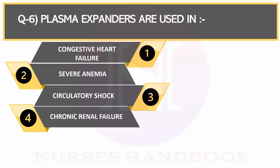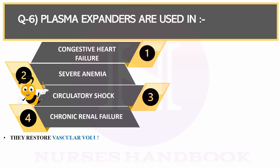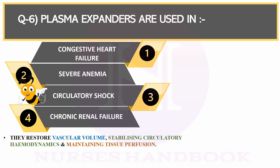The correct answer is circulatory shock. Plasma expanders are agents which have a relatively higher molecular weight. They increase plasma volume, stabilize circulatory hemodynamics, and maintain tissue perfusion. The reason plasma expanders are the choice of treatment is because in shock, blood volume reduces, and plasma expanders can bring the volume to normal very quickly.